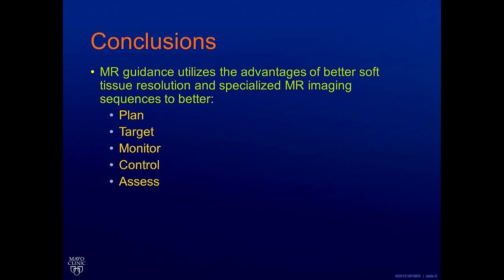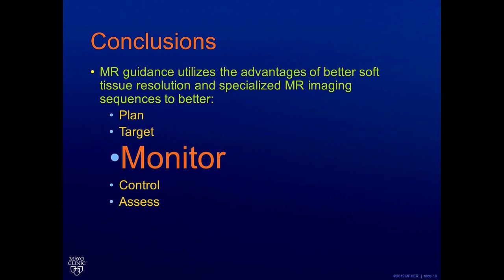In conclusion, MR guidance uses the advantages of better soft tissue resolution and specialized MR imaging to plan for treatment better, to target the tumors better, monitor the ablation in the best possible way, and to control that ablation so that we treat what we want to treat and do not treat anything that we want to stay away from. It also allows us to thoroughly assess our treatment afterwards. But out of all of these, MR offers the most powerful mechanism to monitor our ablations so that we can try to achieve the best possible treatment for the tumor.